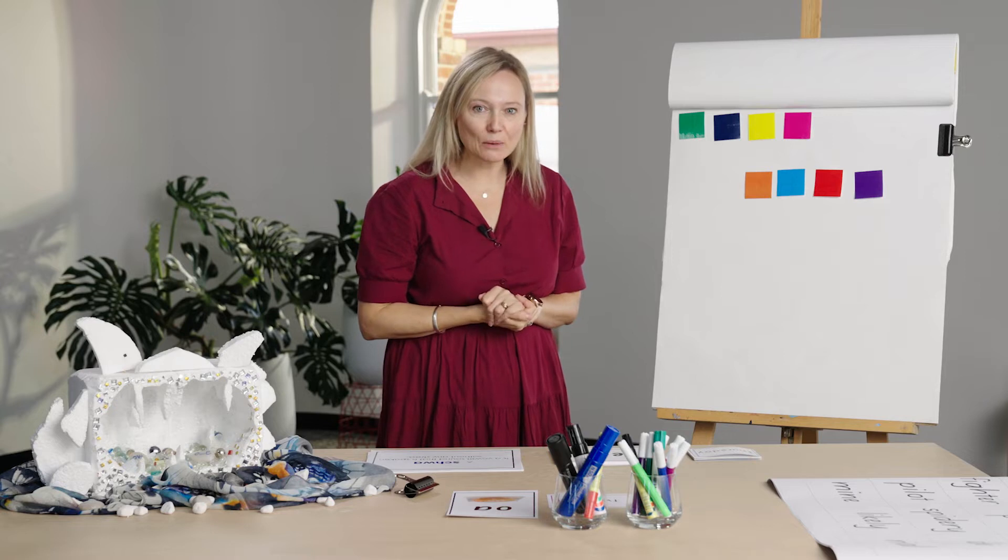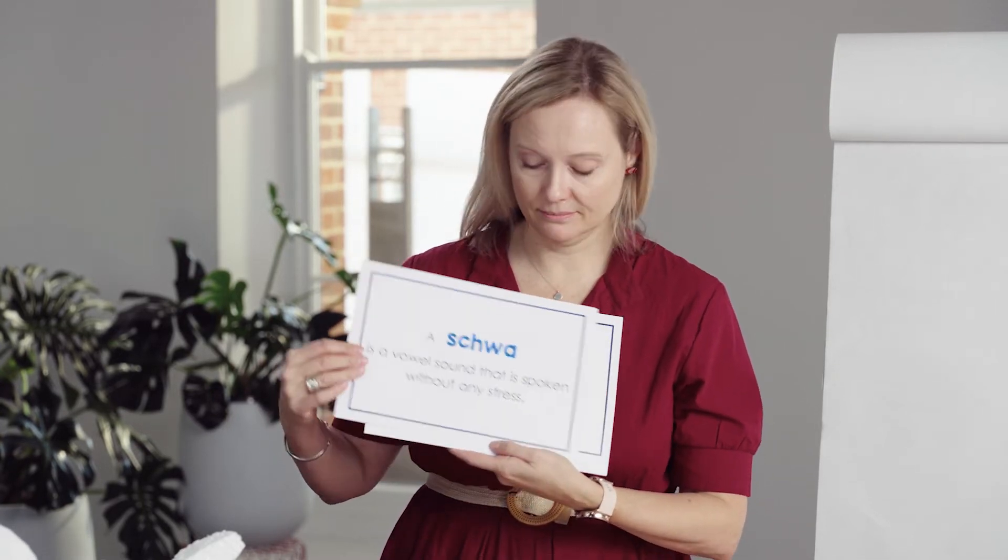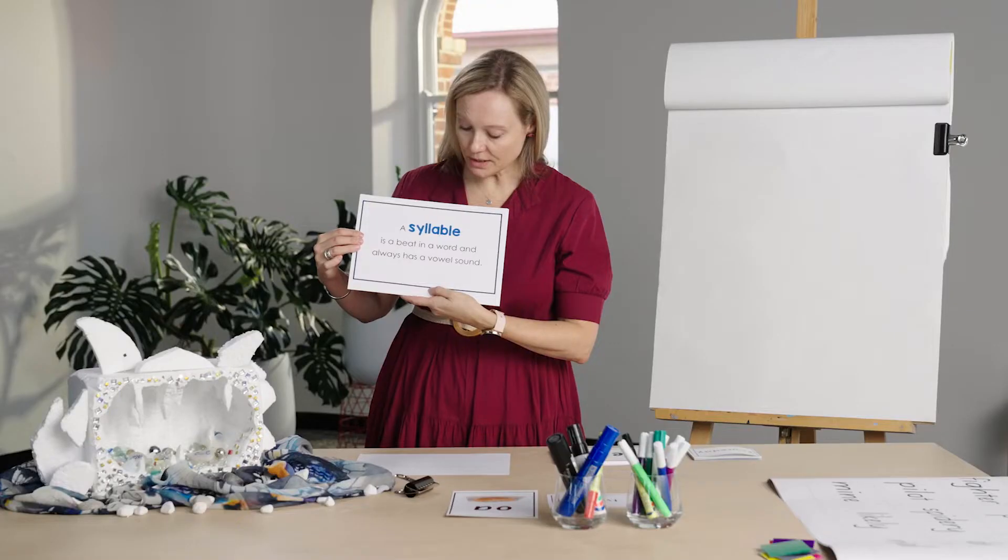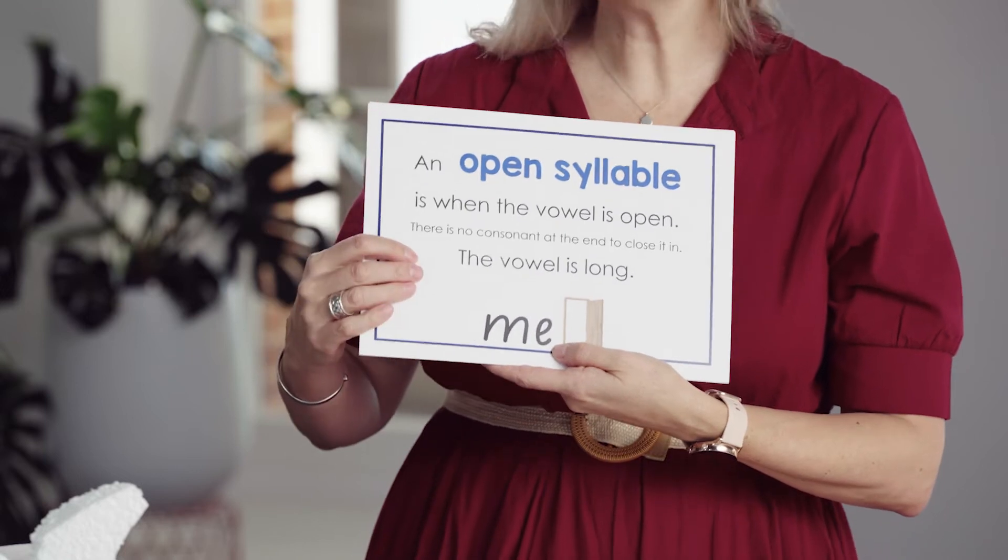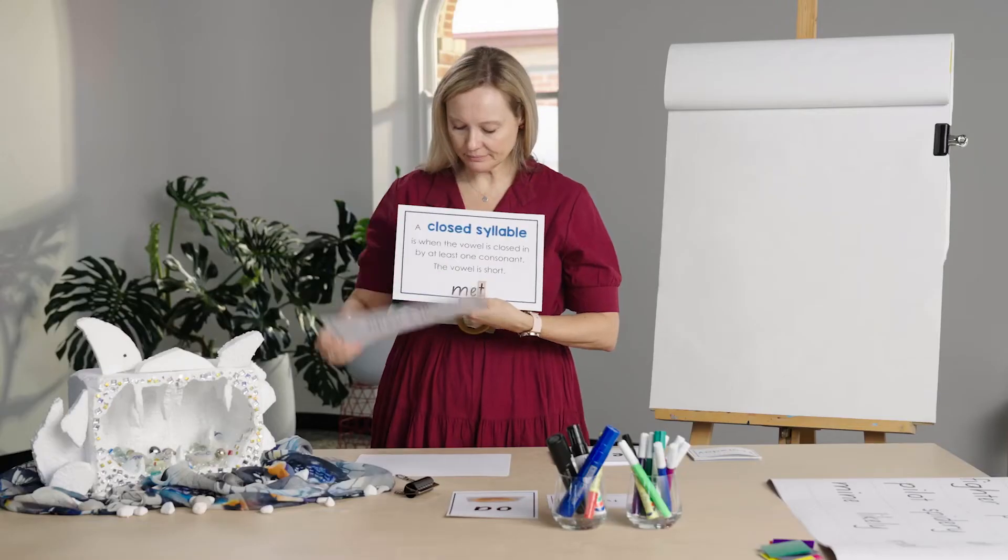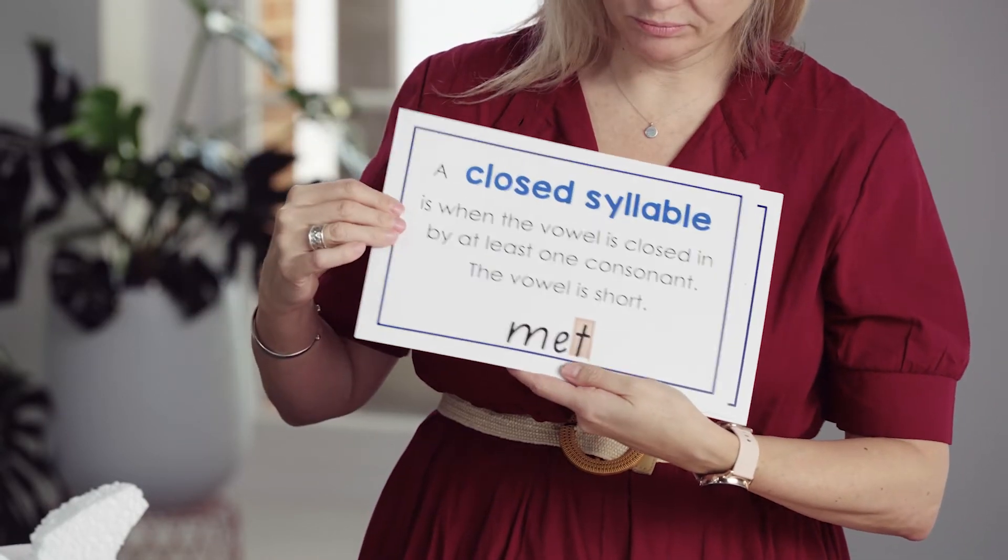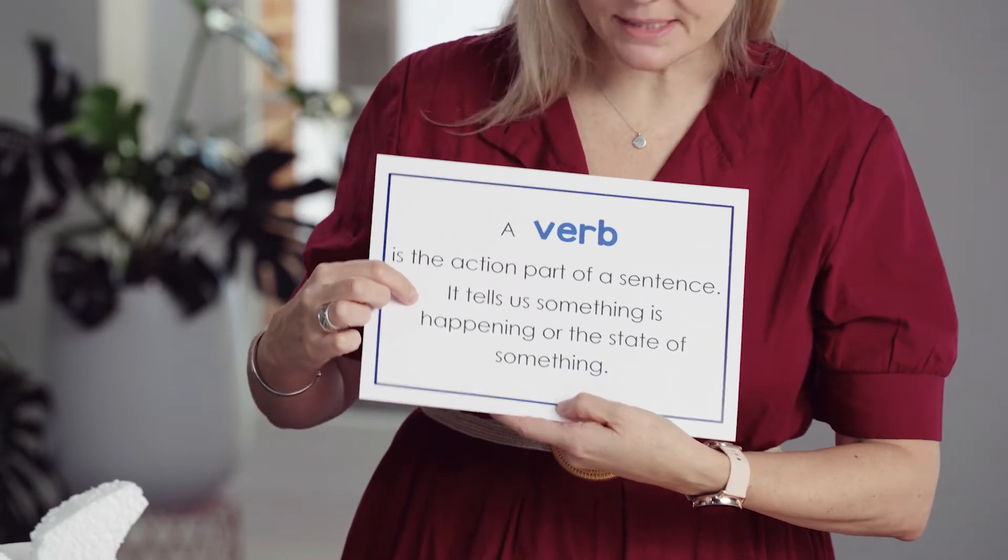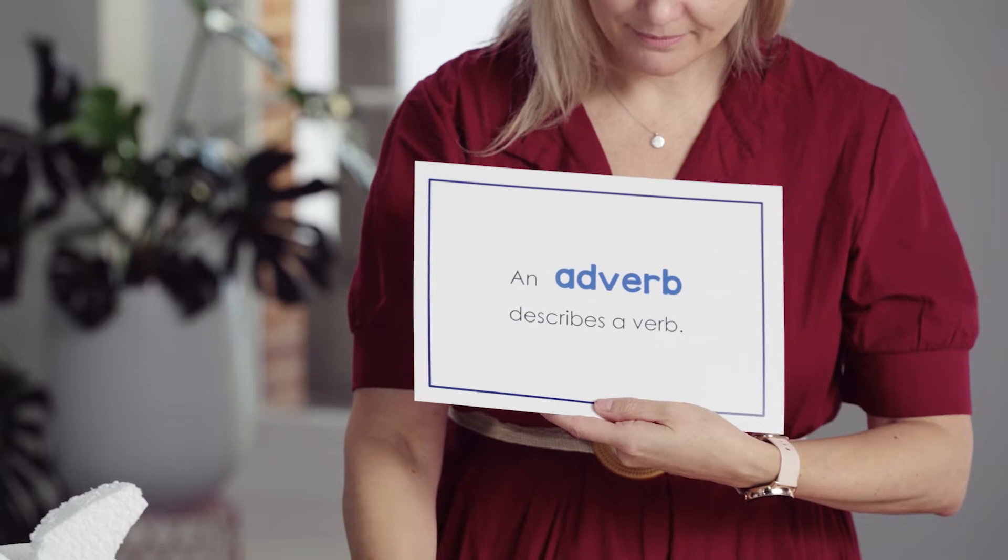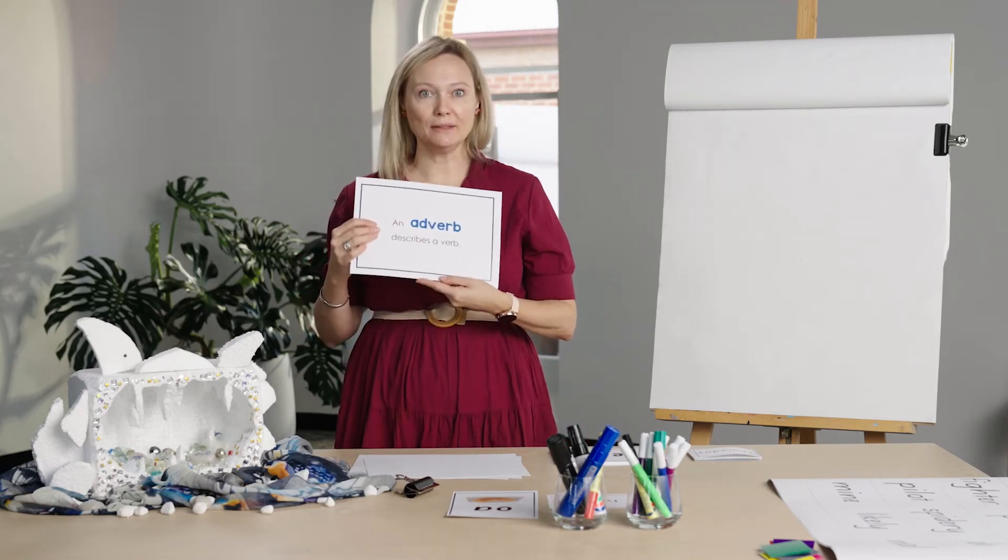I'll get my board ready and let's get started with our lesson. So let's start with some definitions. A schwa is a vowel sound that is spoken without any stress. A syllable is a beat in a word and always has a vowel sound. An open syllable is when the vowel is open. There is no consonant closing in. A closed syllable is when the vowel is closed in by a consonant or two. The vowel is short. A verb is the action part of a sentence. It tells us something is happening or the state of something. And an adverb describes a verb. She ran quickly. I ate slowly. Good job.